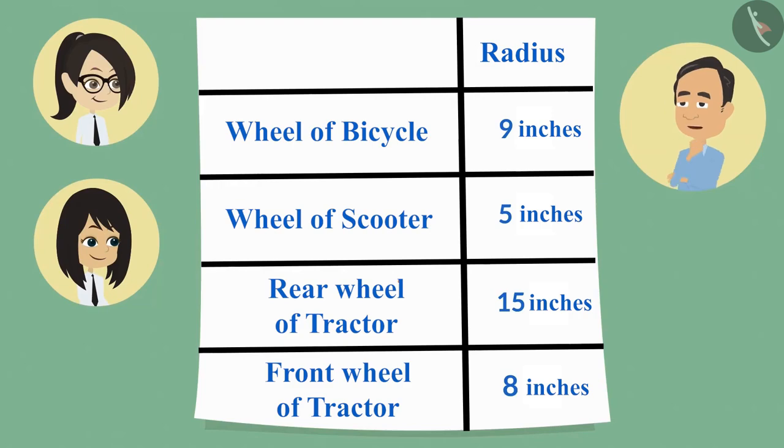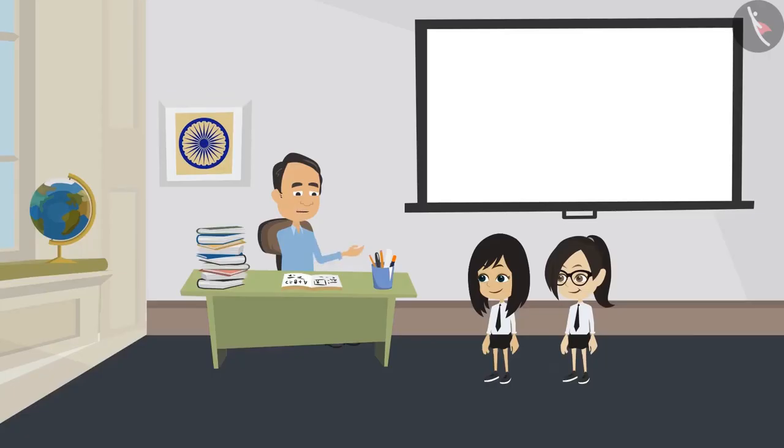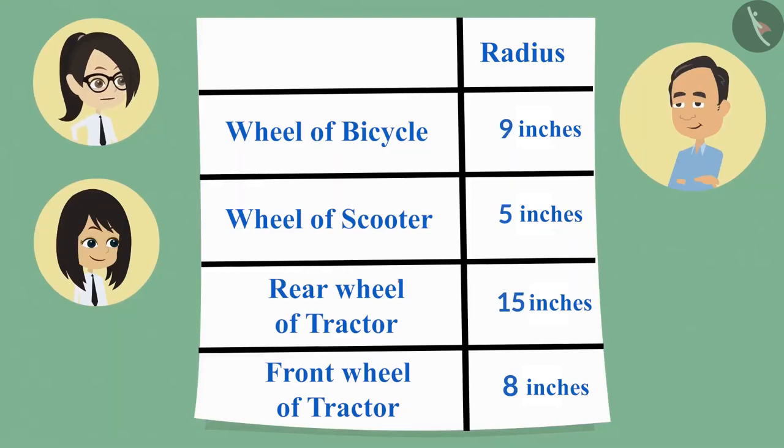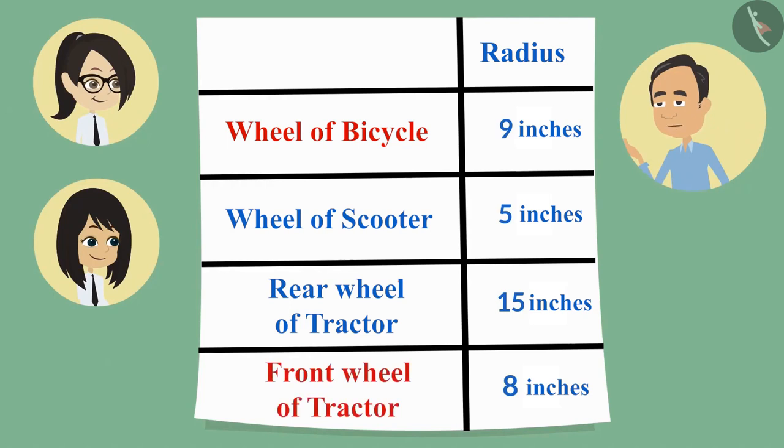Yes, your measurements look right. Which wheel had the largest circle? The rear wheel of the tractor had the largest circle. And which was smaller, front wheel of the tractor or the bicycle?